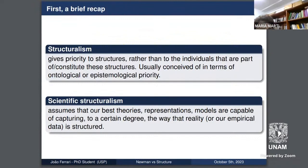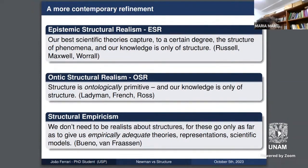For example, we have epistemic structural realism — the idea that we have only knowledge of structure, with various degrees. We can commit to this claim regarding unobservables. If we want to be more ontologically committed, we can opt for ontic structural realism, which takes structures to be ontologically primitive. And if we reject this, we can engage with structural empiricism — the idea that our structures go only as far as to give us empirically adequate theories, representations, and models.